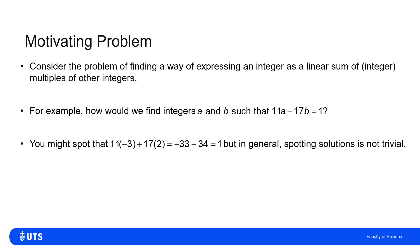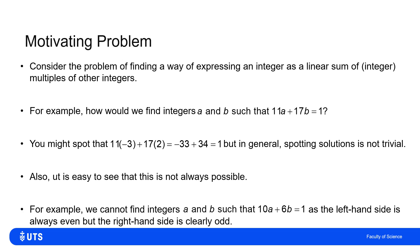In general it can be a lot harder than that. Indeed, it isn't always possible. Let's say I wanted to find integers a and b such that 10a plus 6b was 1. Well, 10 lots of something and 6 lots of something will give me an even number, so I can't have the sum of two even numbers being 1.